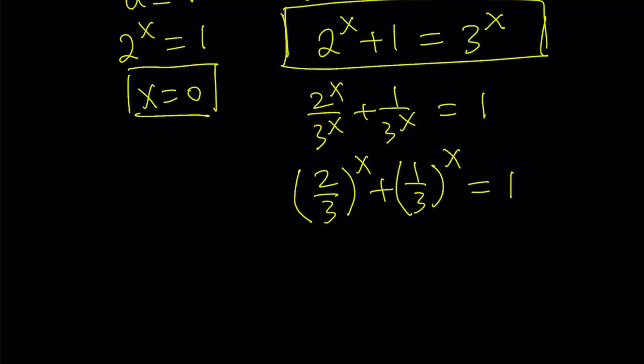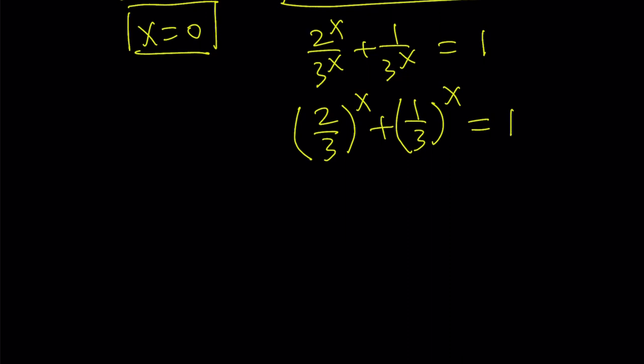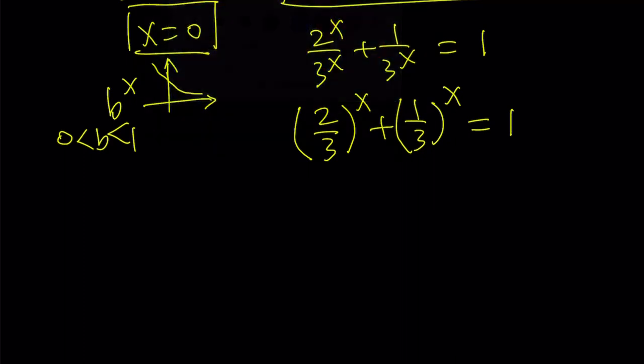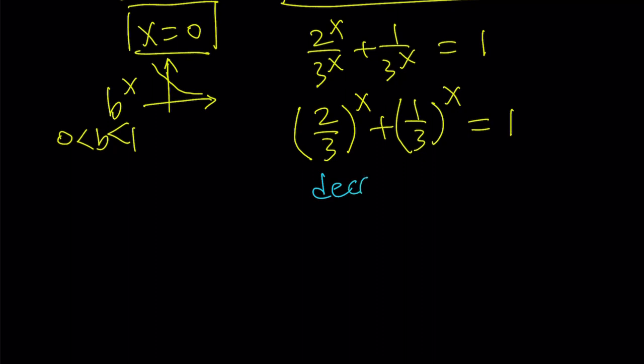Now, this is really cool because on the left-hand side, we have a decreasing function. How do I know that? If you have b to the power x and b is between 0 and 1, then you're going to get a decreasing function. That's what happens. And you can differentiate both sides to see that it's decreasing, right? Because ln b is going to be negative, obviously. So, we have a decreasing function being equal to a constant, right? So, the left-hand side is decreasing, and this is constant.